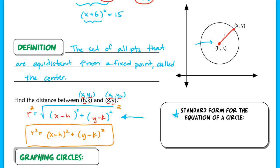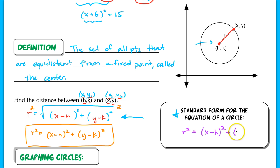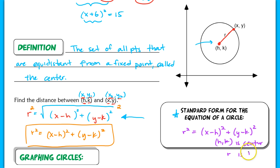This is the standard form. You need to make sure you have this memorized: r squared equals (x minus h) squared plus (y minus k) squared, where (h, k) is the center of your circle and r is the radius.